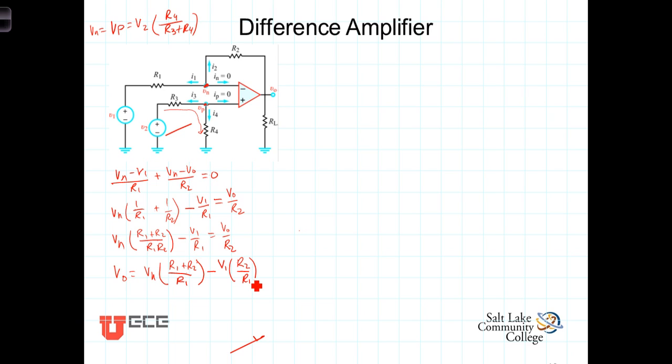Okay, so we've got the two terms. We have the inverting term here V1 times R2 over R1 and we have V sub n. Now, we need to replace V sub n with V2 times R4 over R3 plus R4 so that we can see the dependency of the output on V2.